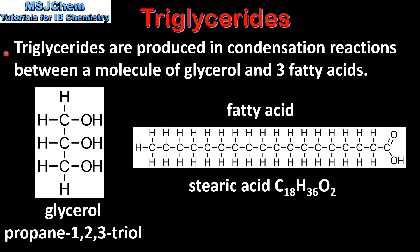Triglycerides are produced in condensation reactions between a molecule of glycerol and three fatty acids. On the left we have a molecule of glycerol, which is also called propane-1,2,3-triol. As you can see, it has three hydroxyl groups. On the right we have a fatty acid which is stearic acid. It has a long hydrocarbon chain with a carboxyl group at one end.